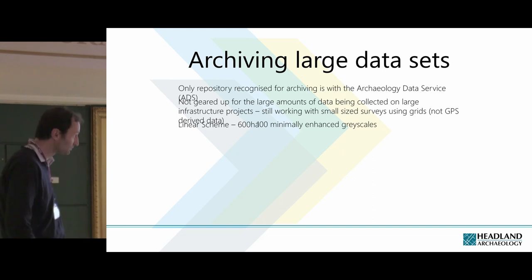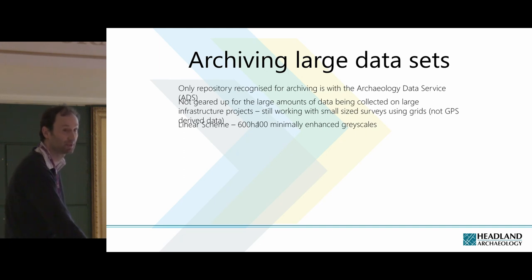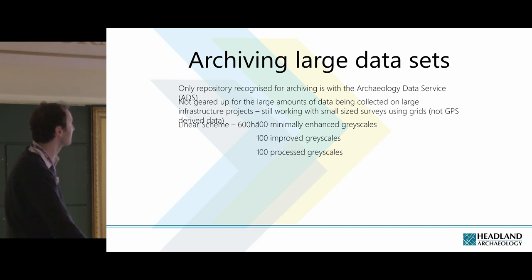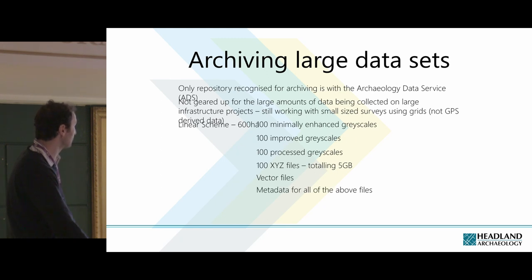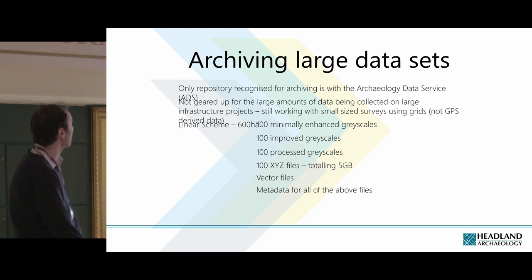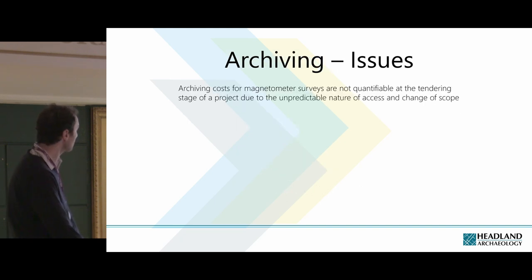For a linear scheme of say 600 hectares, you've got 100 minimally enhanced grayscale images of the individual fields, then 100 improved grayscales — these are all TIFFs. Then you've got minimally enhanced grayscales, improved grayscales, processed grayscales, and then your raw data in XYZ or CSV format. That totals about 5 gigabytes if collected with a Bartington cart. Then you've got your vector files of your interpretation in DXF format, plus metadata for all the files. All that comes to quite a lot of information — you won't be able to archive that over the internet, and you certainly won't be able to do it over ADS Easy.